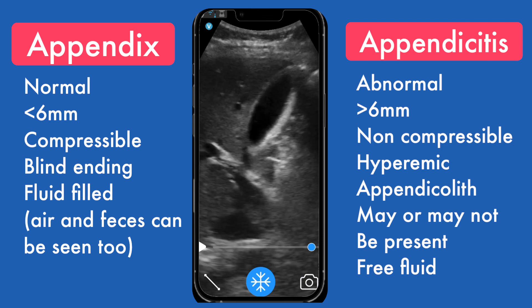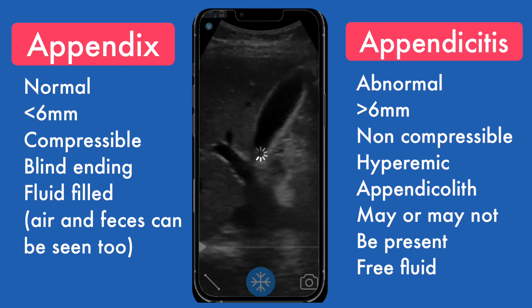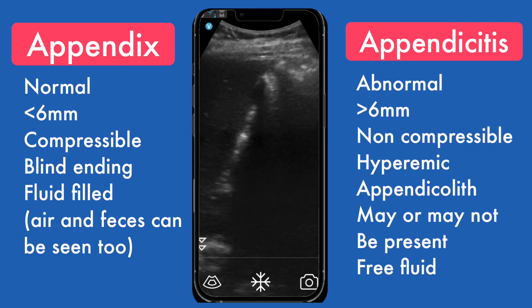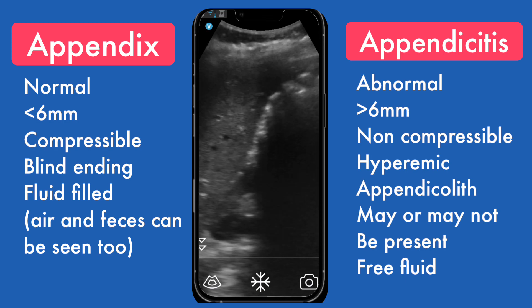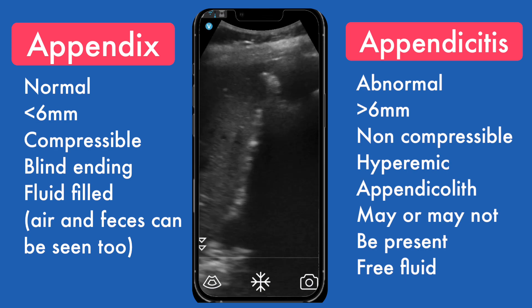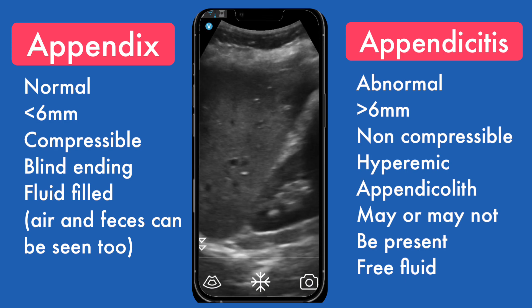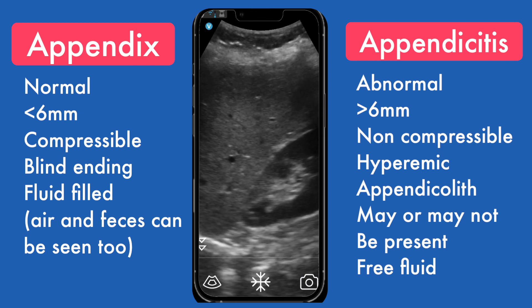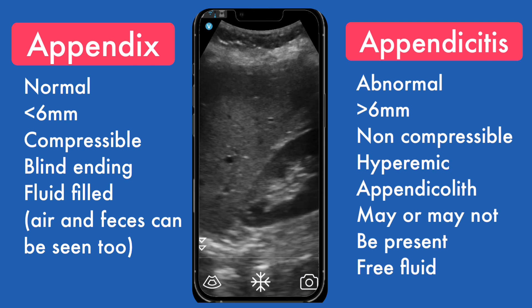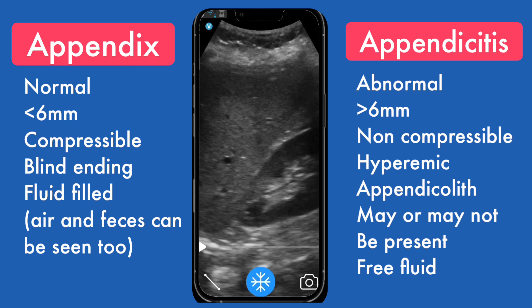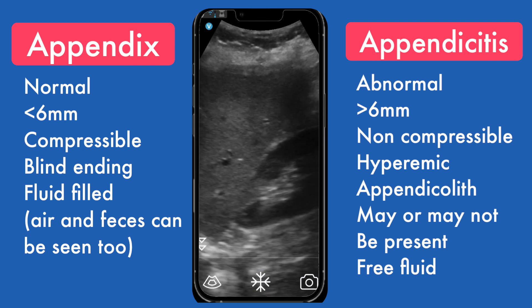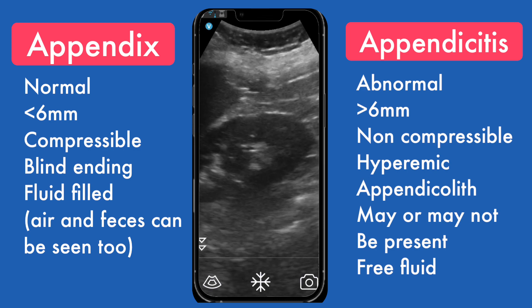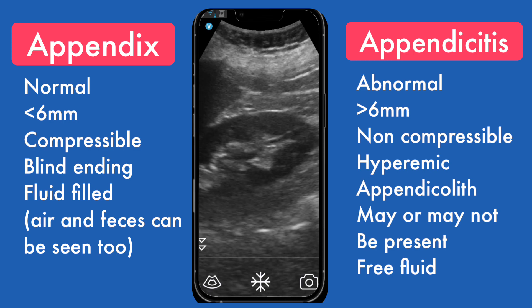From there, I move laterally to show the right lobe of the liver, the kidney, and the interface between the liver and the kidney. I make sure there's no fatty liver and no fluid in Morrison's pouch. The kidney looks normal. I take a couple pictures of the kidney in sagittal, then transverse images of the gallbladder and the right kidney to make sure there's no hydronephrosis.